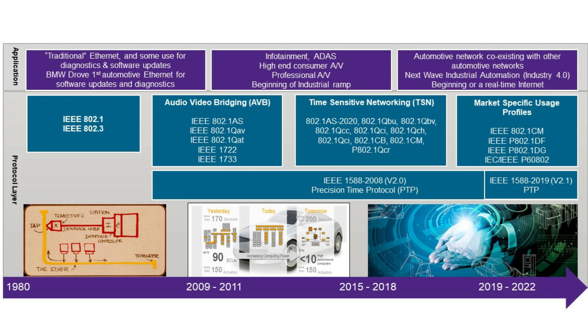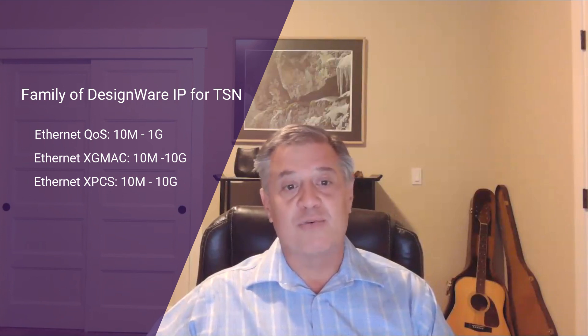All of these standards give you a collection of tools to build your chips to meet your customer's requirements. We have a family of IP: the Ethernet QoS, supporting 10 Meg through 1 Gig, customizable with different interfaces such as AMBA AXI, with offloading and time-sensitive networking features for your application. We also have the DesignWare XGMAC, which supports 10 Meg through 10 Gig, including the recent standards for 2.5 and 5 Gig. We support connections through the XPCS, which again supports 10 Meg through 10 Gig.